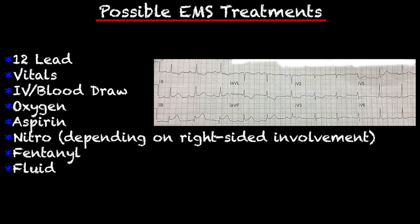As an EMS provider out in the field, there are a few things we can do to help this patient before we get to the hospital. We can get a 12-lead and confirm the patient is having a STEMI, move that V4 over to confirm right-sided involvement if it's there, get vitals, obtain IV access, and get a blood draw for the hospital. Depending on the patient's O2 saturation, we can apply oxygen, give aspirin. Nitro is indicated except in patients having inferior MIs with right-sided involvement — follow your protocol on that, but a lot of protocols contraindicate nitro when you've confirmed right-sided involvement.